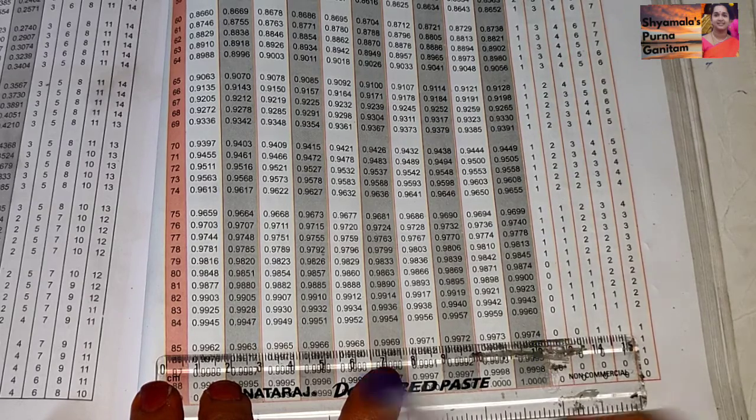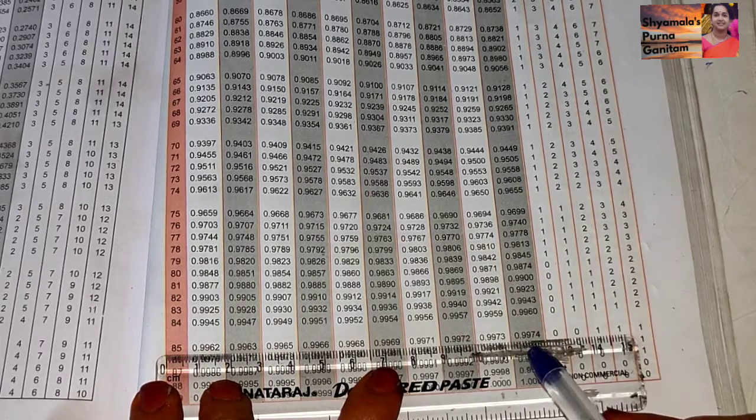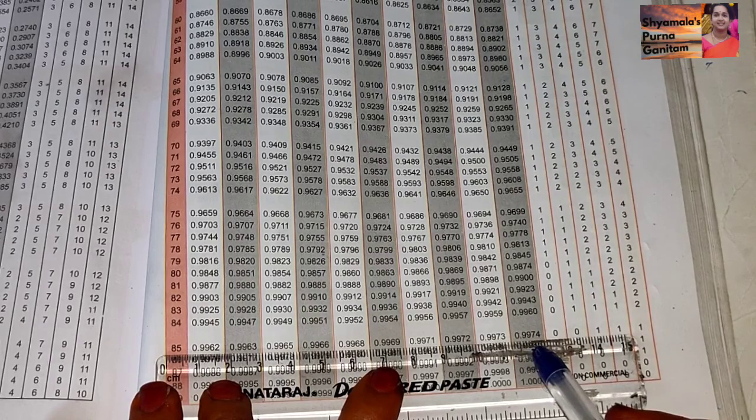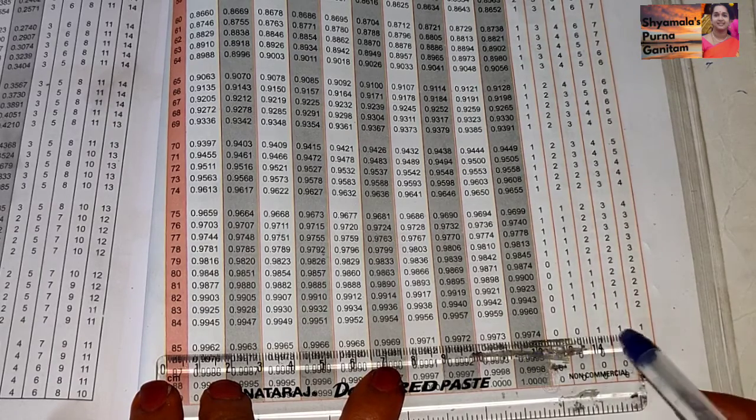54 minutes. 85 degrees 54 minutes we are getting 9974, but we need to get 0.9975.